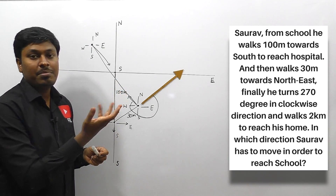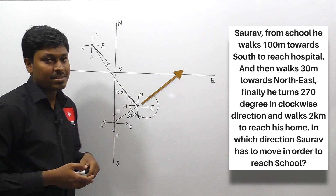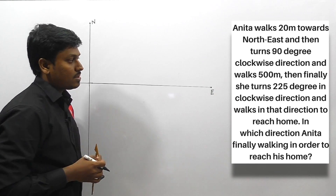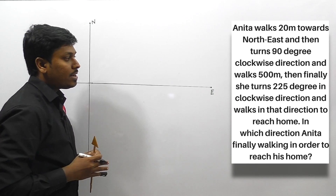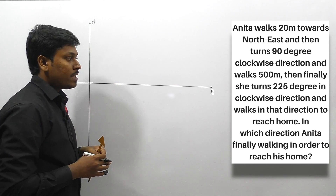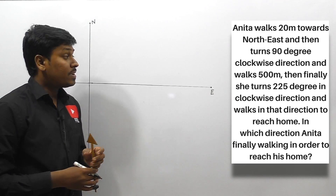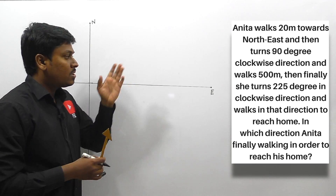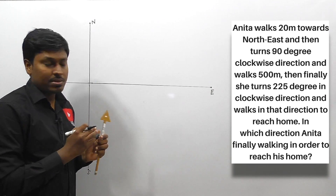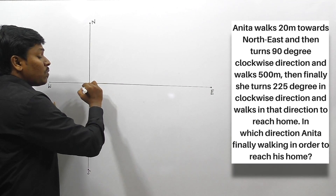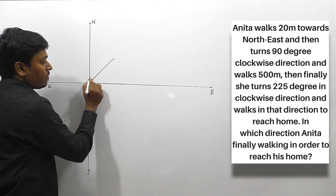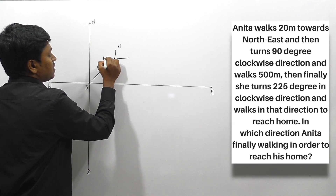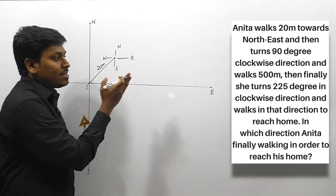After watching two questions, you can now understand the concept and this pattern. Let me move on to the third and last question. Question number three: Anita walks 20 meters towards northeast, then turns 90 degrees in clockwise direction and walks 500 meters, then finally she turns 225 degrees in clockwise direction and walks to reach her home. In which direction does Anita finally walk in order to reach her home? From the starting point she is walking 20 meters towards northeast — draw exactly at an angle of 45 degrees. After reaching this point, draw a small direction: north, south, west, and east.